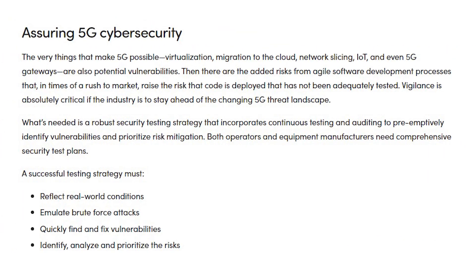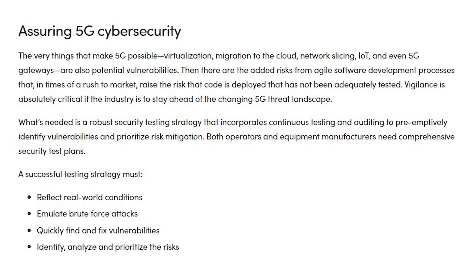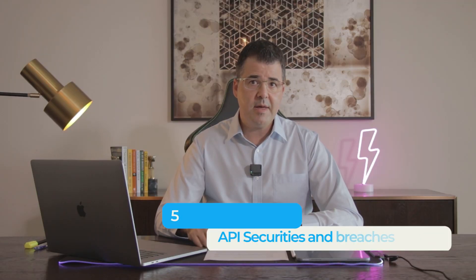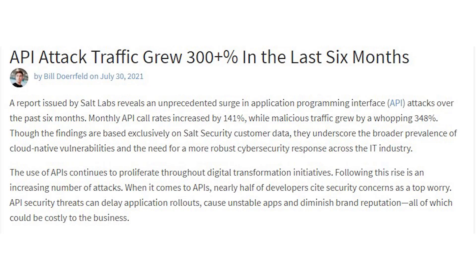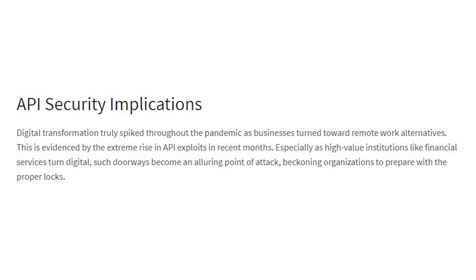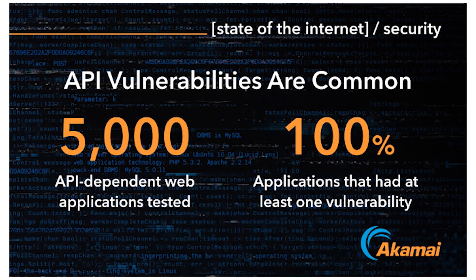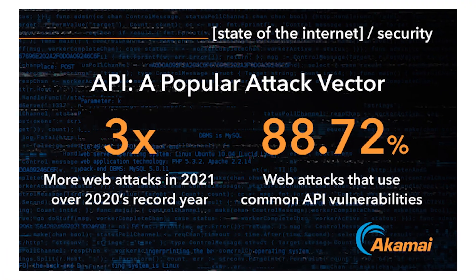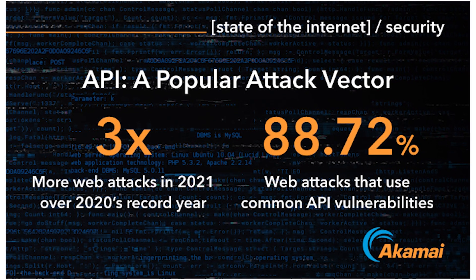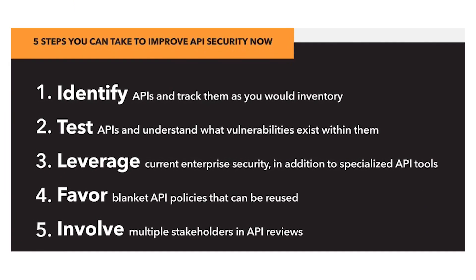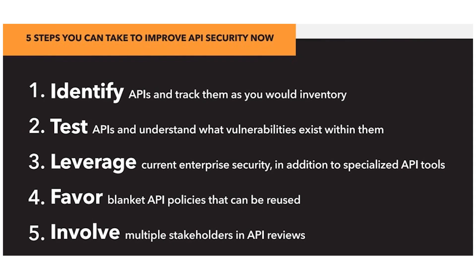Fifth are API security and breaches. As companies become more dependent on APIs, cybercriminals have invented API-based attacks, which can lead to hostile impacts on frequently used applications and social media. Application programming interfaces are widely used because data and services can be broadly broadcasted and consumed over mobile devices. By this, cloud-native threats can occur, which would lead to the loss of sensitive data owned by companies and users.